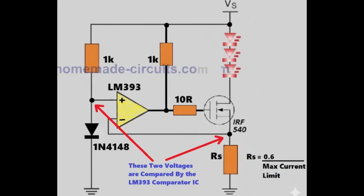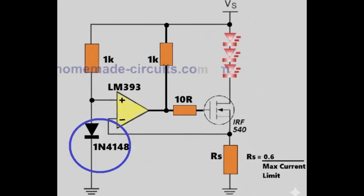The reference voltage is generated using a silicon switching diode connected across the non-inverting input of the LM393 and ground. This diode creates a nearly constant voltage of around 0.6 volts. Now the inverting input of the LM393 comparator IC is connected to the sense resistor voltage.